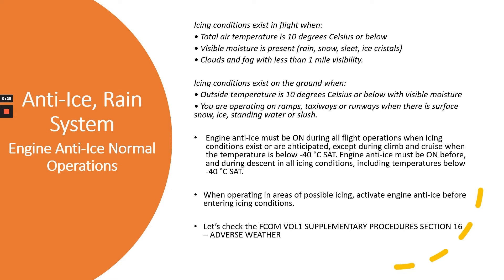Icing conditions exist in flight when total air temperature is 10 degrees Celsius or below and visible moisture is present — rain, snow, sleet, ice crystals, clouds and fog with less than one mile visibility. Icing conditions exist on the ground when outside temperature is 10 degrees Celsius or below with visible moisture, and you are operating on ramps, taxiways or runways where there is surface snow, ice, standing water, or slush.